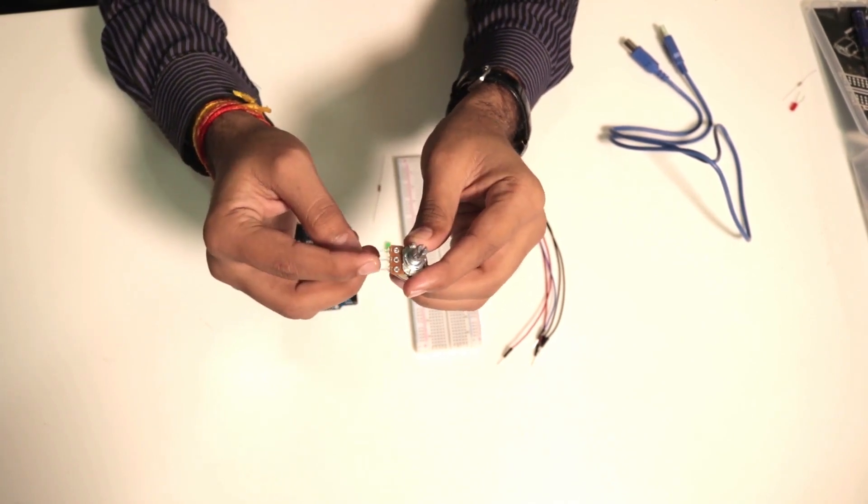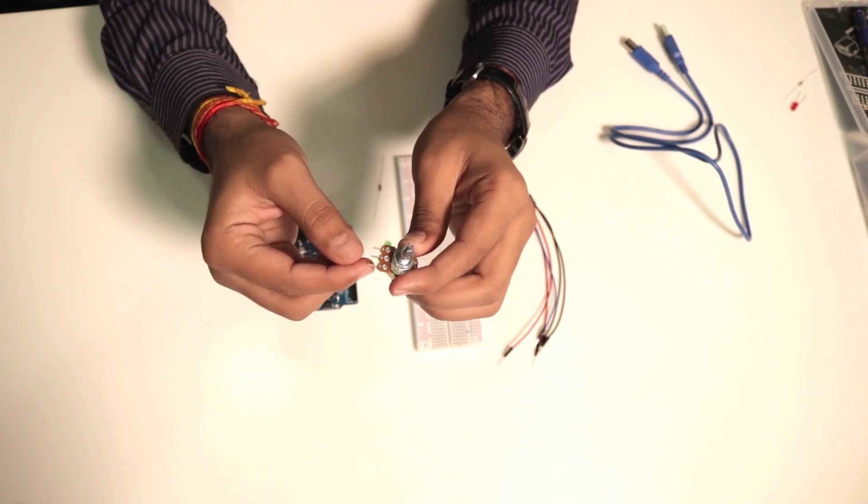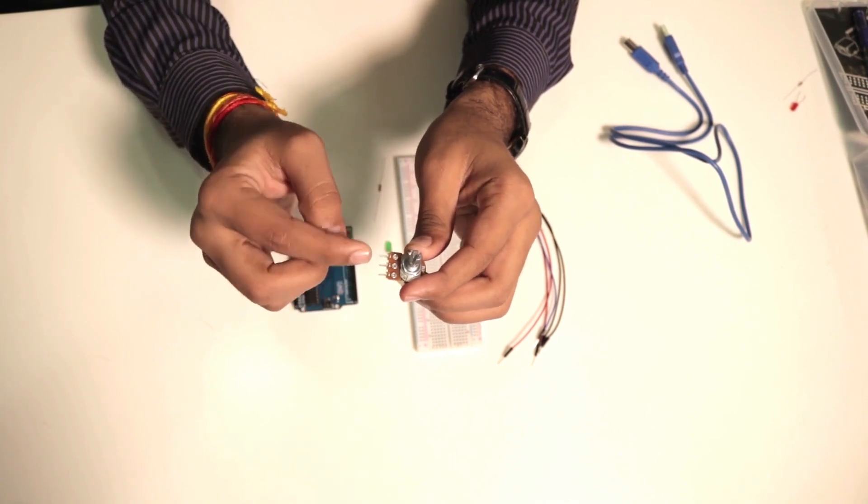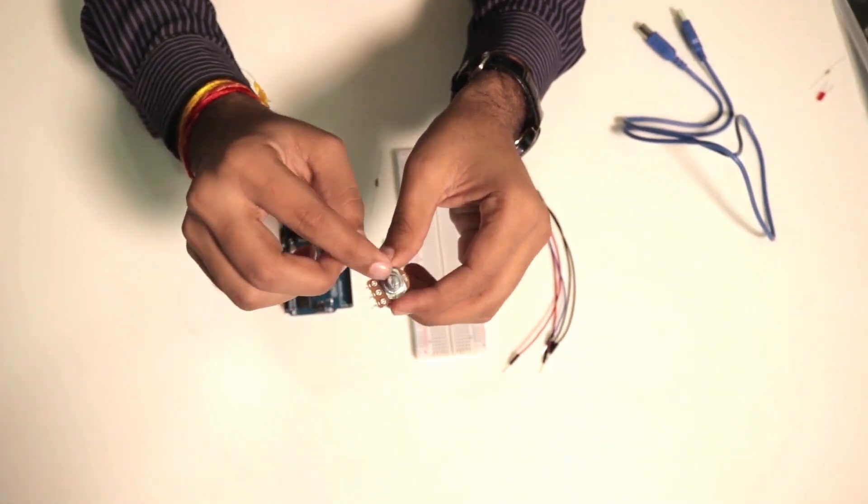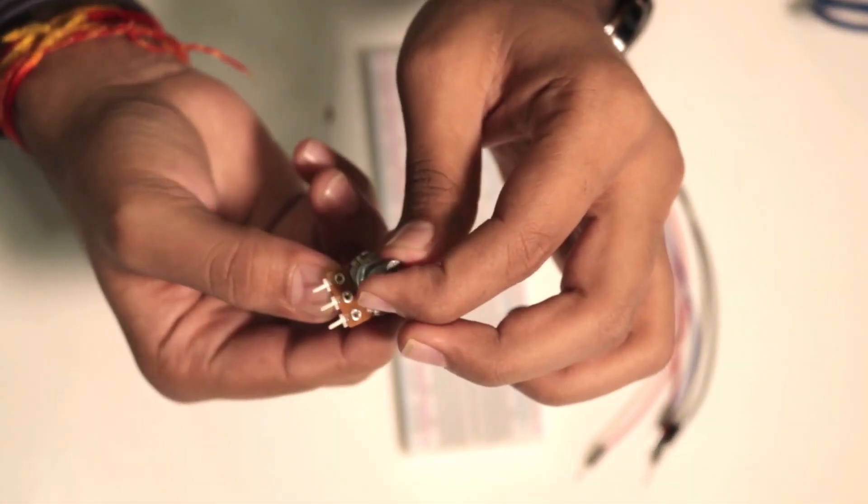As you can see, there are three pins and the both side pins are the fixed end and the second one is the variable end of this potentiometer.